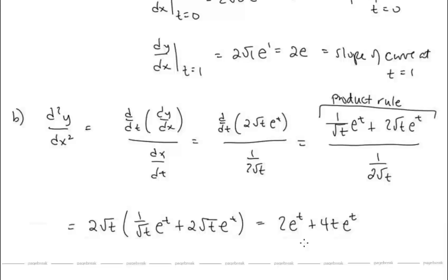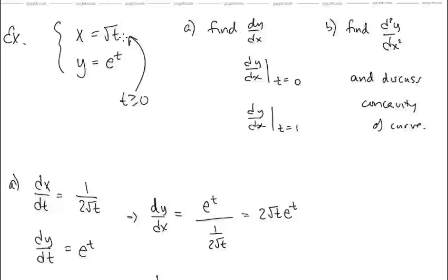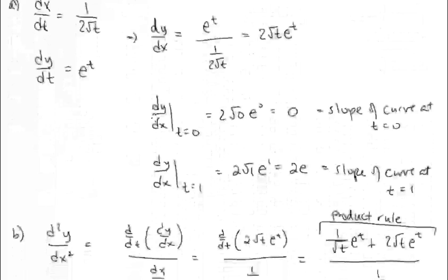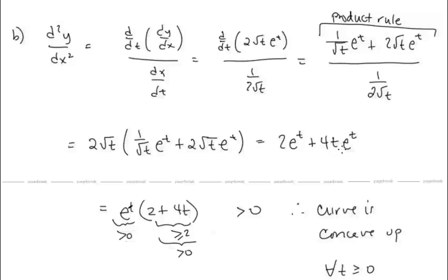What does this second derivative tell us about concavity? Because x equals radical t, we know t must be greater than or equal to 0. Looking at 2e to the t plus 4t e to the t: the term 2e to the t is strictly positive, and 4t e to the t is greater than or equal to 0. We can also factor as e to the t times (2 plus 4t), where 2 plus 4t is at least 2, and e to the t is always positive. So the second derivative is strictly positive, meaning the curve is concave up for all t greater than or equal to 0.